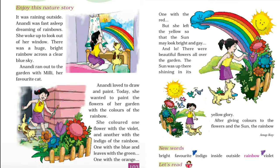She colored one flower with violet and another with the indigo of the rainbow. She colored one flower violet, another flower indigo — which is a light shade of blue. And one with blue and the leaves with green. Students, indigo and blue are two different colors, both different shades of blue, so don't get confused.